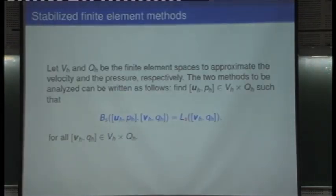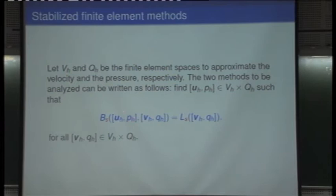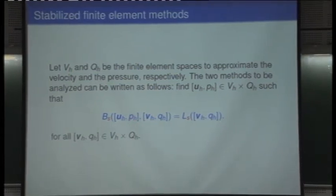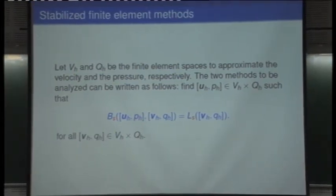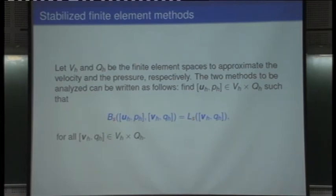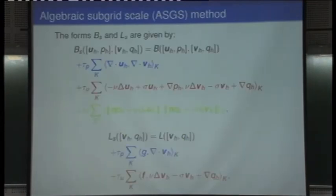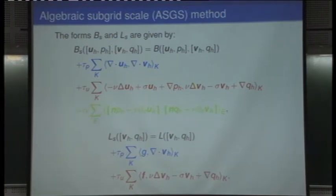The finite element approximation we propose is as follows: we find the velocity and pressure pair such that this variational equation holds, where B and L are not the Galerkin bilinear and linear forms, but the following. The first method is what we call the algebraic scale method, which is what we already saw in the Stokes problem.